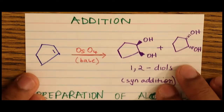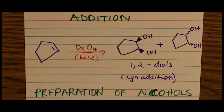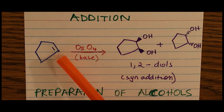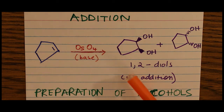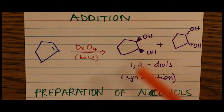Another addition reaction that we encounter in the preparation of alcohols is hydroxylation of alkenes, where we have osmium tetroxide and a base adding across a double bond in a ring to give us 1,2-vicinal diols. I say vicinal because the OH groups are on carbons in the vicinity of one another, or they are neighboring or adjacent to one another.